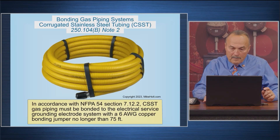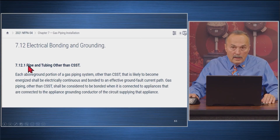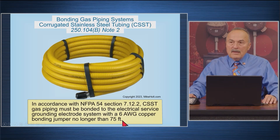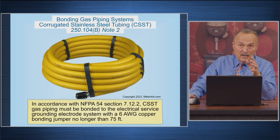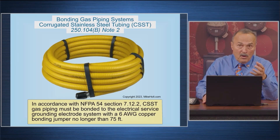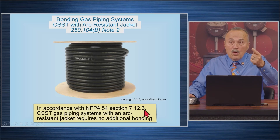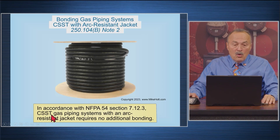Moving on: NFPA 54 7.12.2 states that corrugated stainless steel gas piping must be bonded to the electrical service grounding system with a 6-gauge copper conductor not longer than 75 feet. So if you have CSST, you're going to have to bond it. NFPA 54 7.12.3 states that corrugated stainless steel tubing gas piping systems with an arc-resistant jacket require no additional bonding.